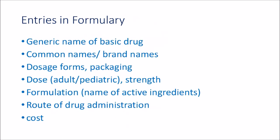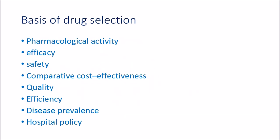The formulary typically describes the generic name, brand name, dosage form, dose, strength, route of drug administration, cost, and formulation if it contains multiple drugs. Like essential drug lists, the criteria for including drugs in the formulary are the same: safety, efficacy, quality, cost effectiveness, and disease prevalence. In addition, the hospital policy may be another factor contributing to the selection of drugs.